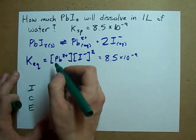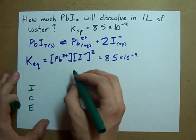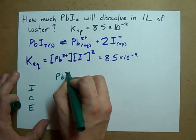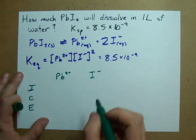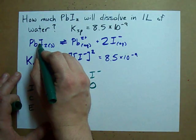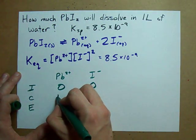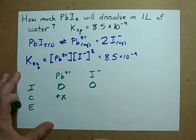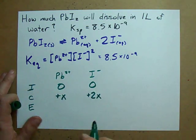This isn't even involved in equilibrium, so I don't even care about this. But if we're talking about our Pb2+ and our I-, they both start at zero. When we dissolve one of these, we get a Pb and we get two I's.